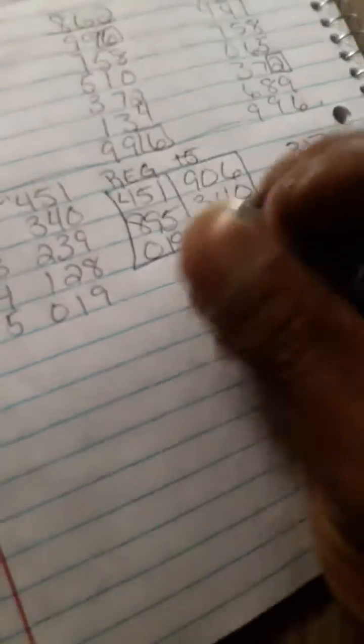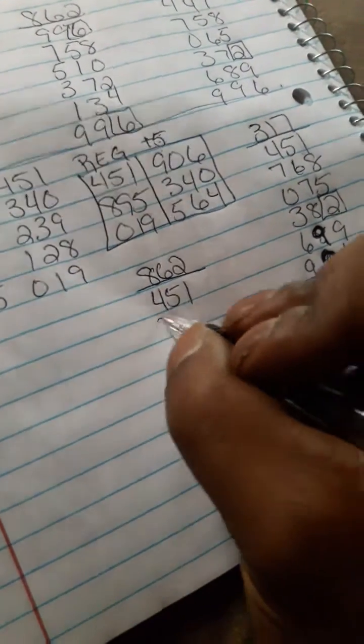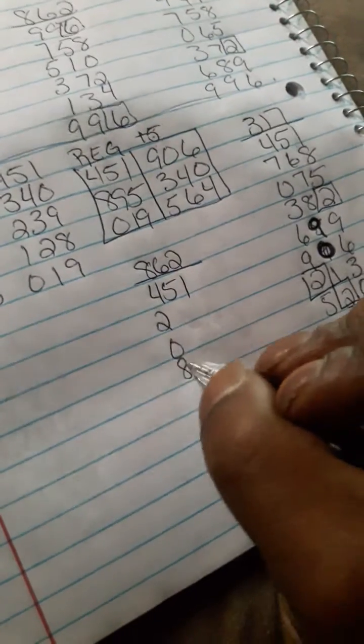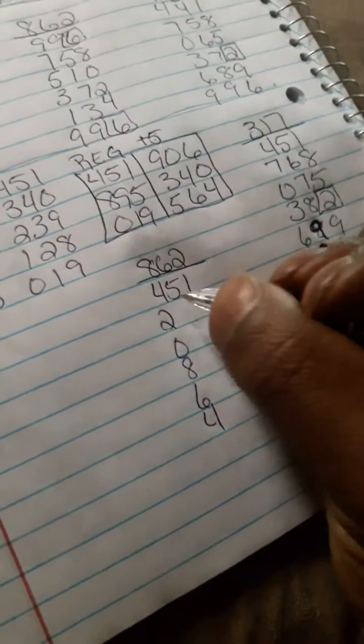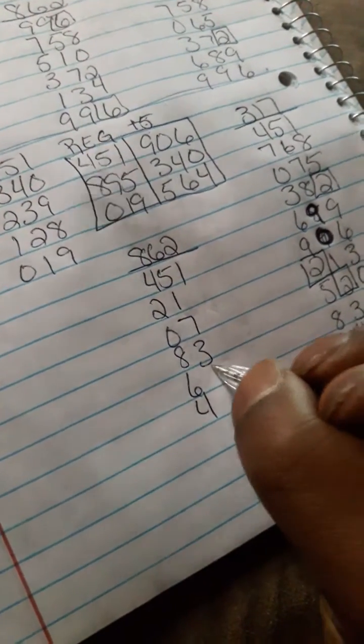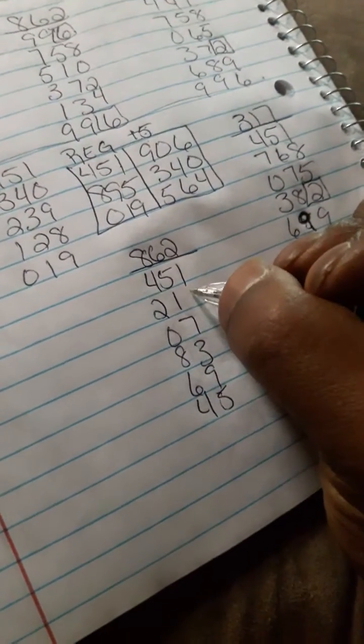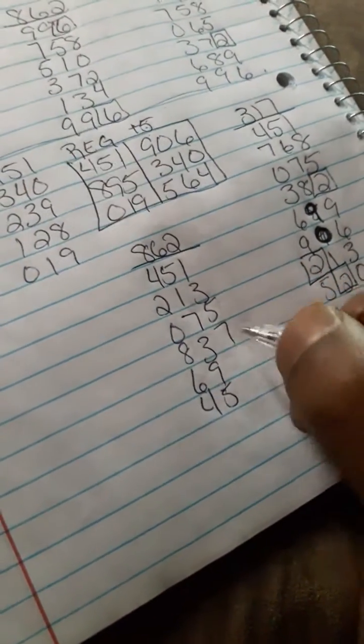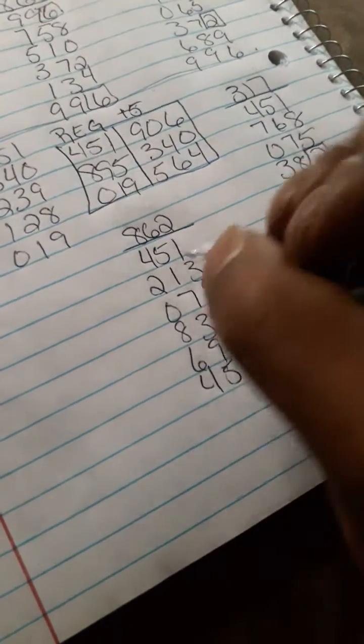Let's do the 862 now. 451. Two, zero, eight, six, four, one, seven, three, nine five, five, five seven, nine, one. Grab your twos for the date.